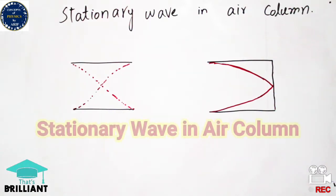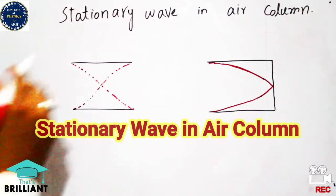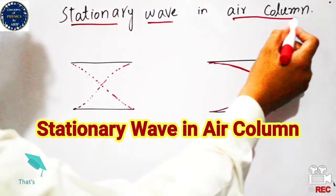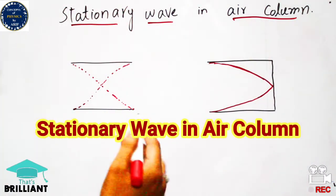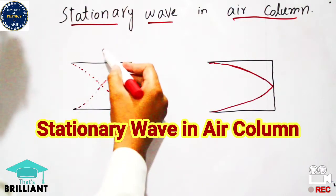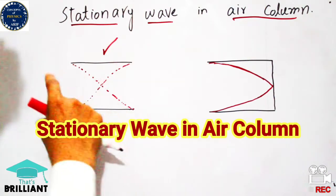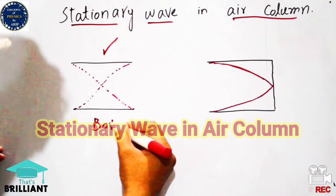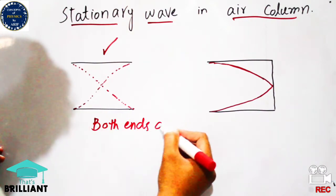Hi guys, welcome to my YouTube channel. In this video I will briefly discuss stationary waves in air columns. Stationary waves in air columns can be produced in two types of pipes. One is known as open from both ends, and in this type air molecules are free to move.